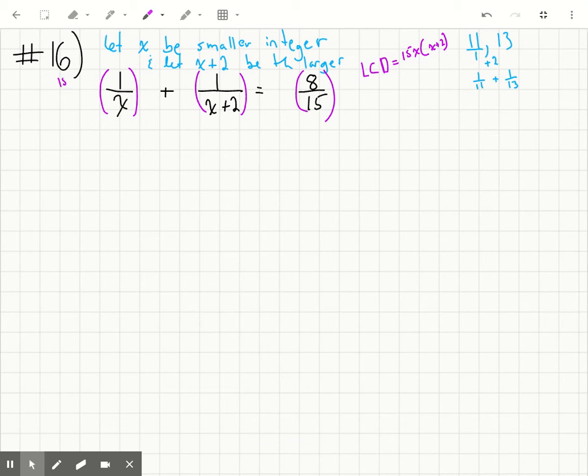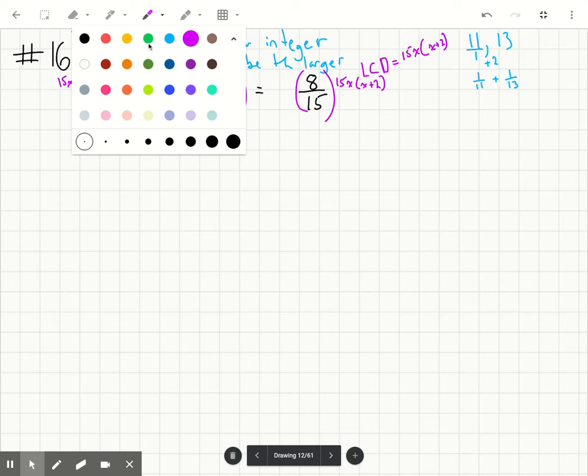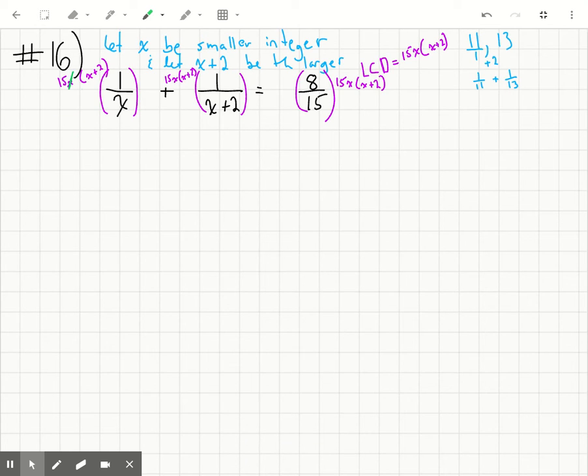And by doing that, we're just going to not have any more fractions to deal with. So 15x times x plus 2, and same here, 15x times x plus 2, and here we have 15x times x plus 2. So some things obviously are going to simplify. So we have x and x, x plus 2 and x plus 2 here, and we've got 15 here and 15 here.